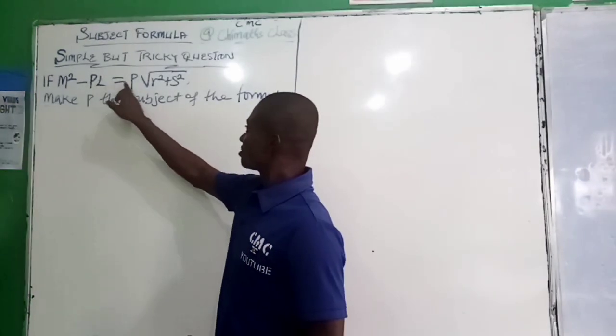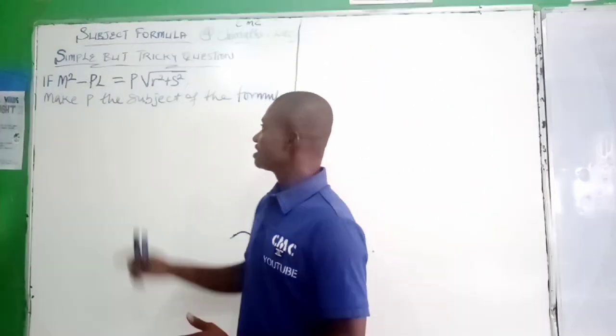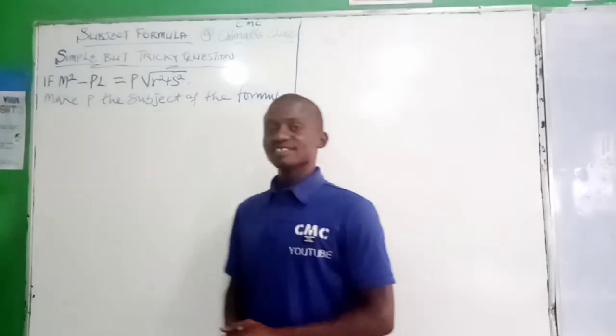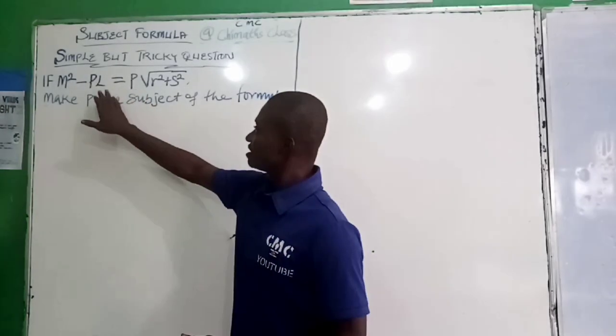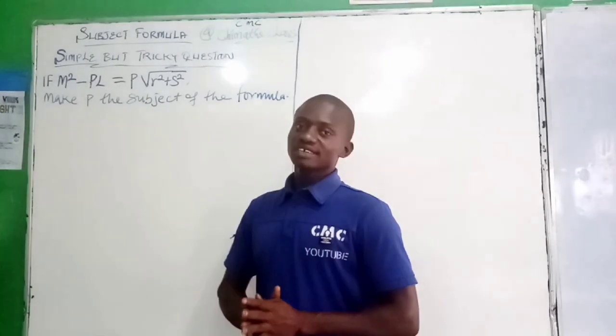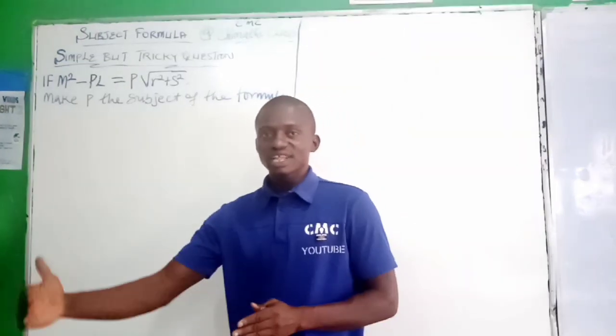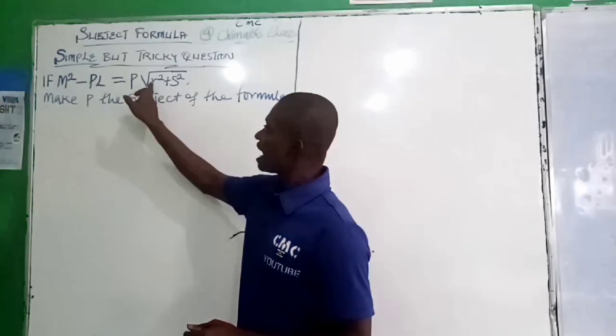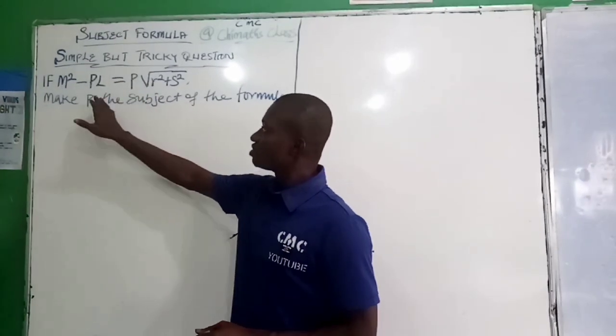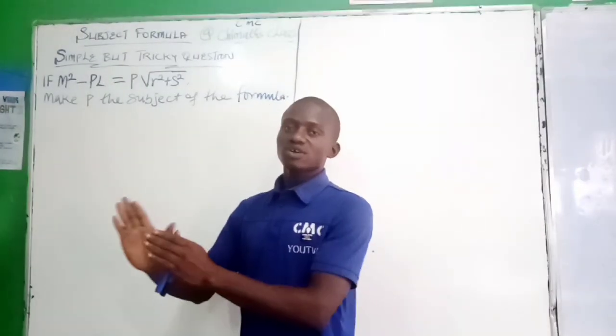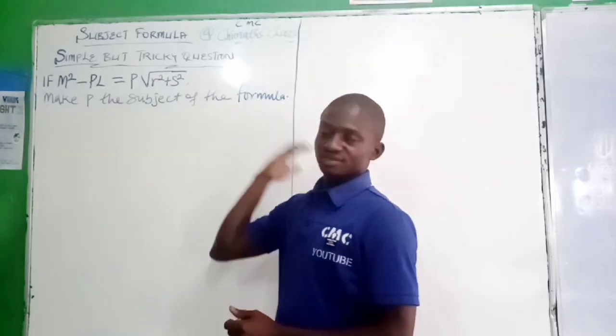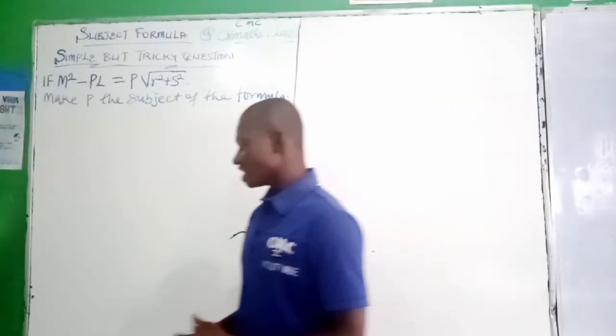We are required to make P the subject of the relation. The basic idea here now is we are going to arrange and make P to be on one side. Making P the subject form is called isolating P or making P to stand alone.